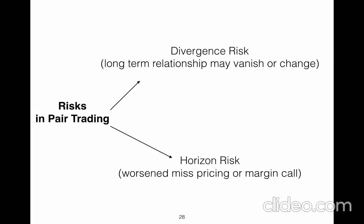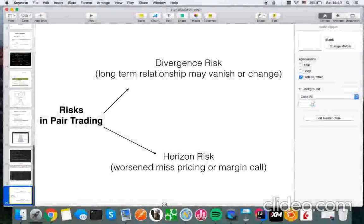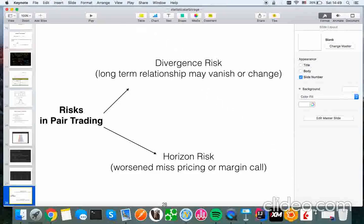But there are risks in pair trading, divergence risk, and horizon. Because it worsens, mispricing, or margin call, a long-term relationship may vanish or change. For example, between GBP/USD and EUR/USD, it has a positive correlation of about 90%. But next day, it should be just 70% or less.